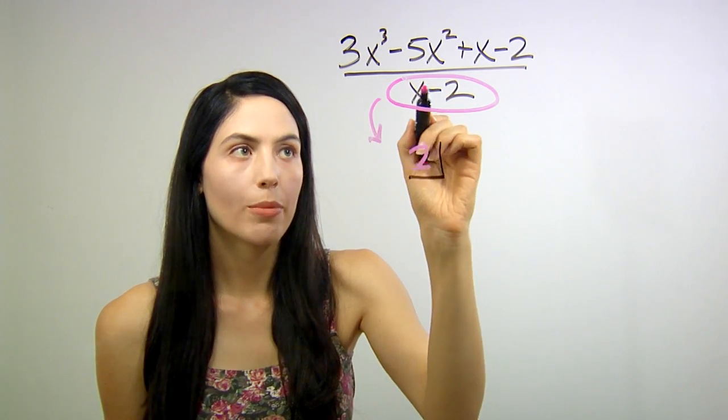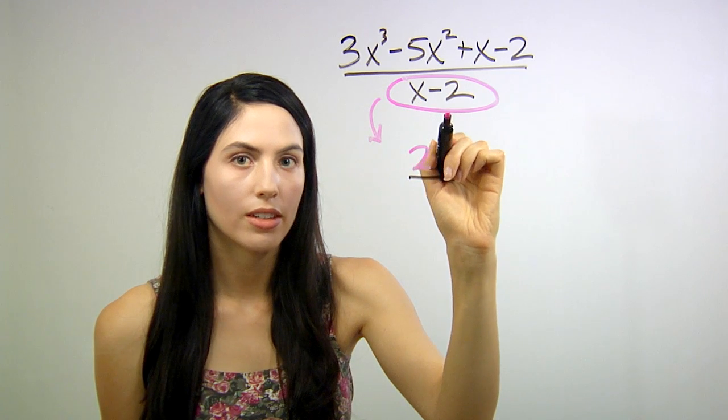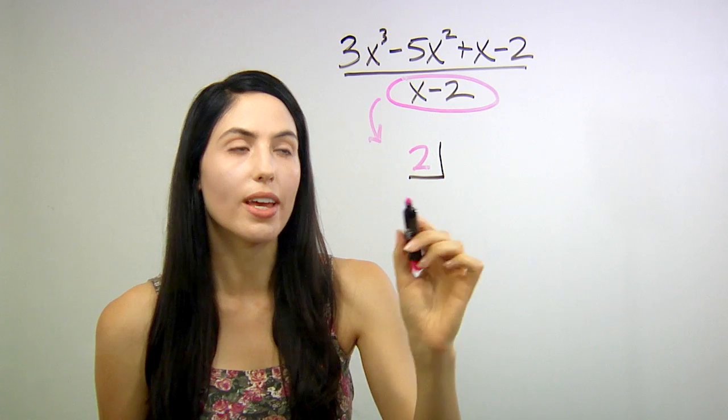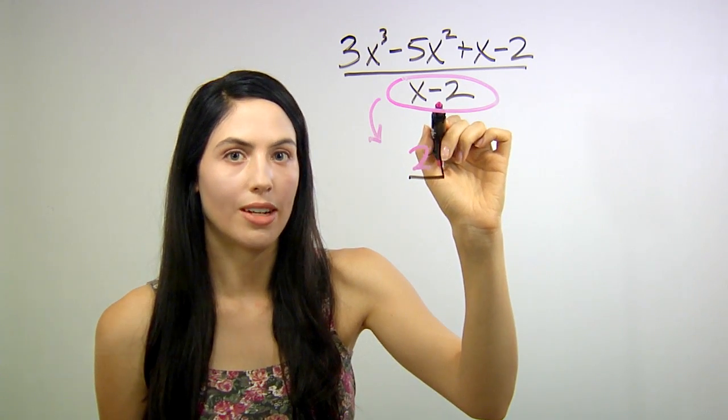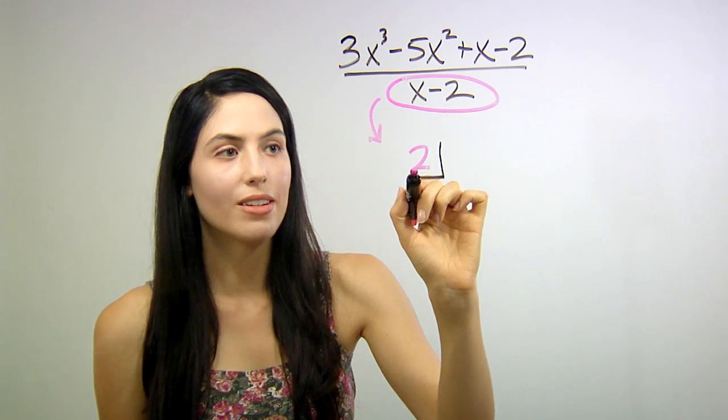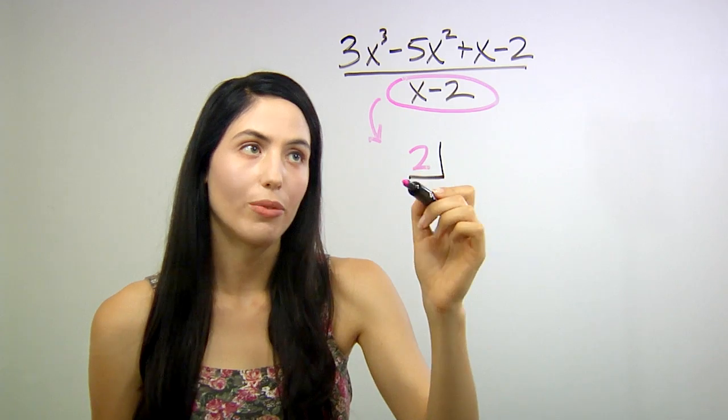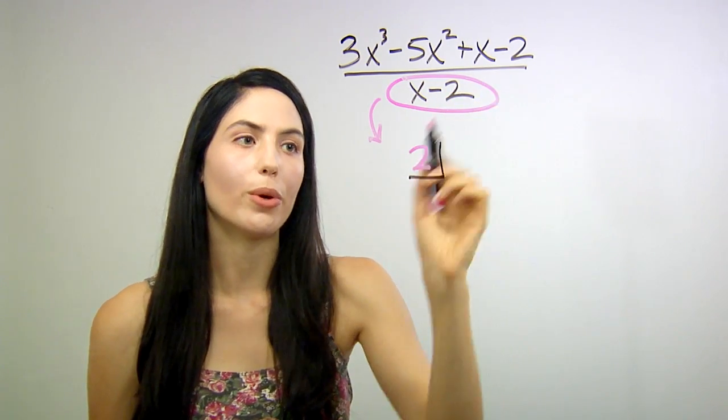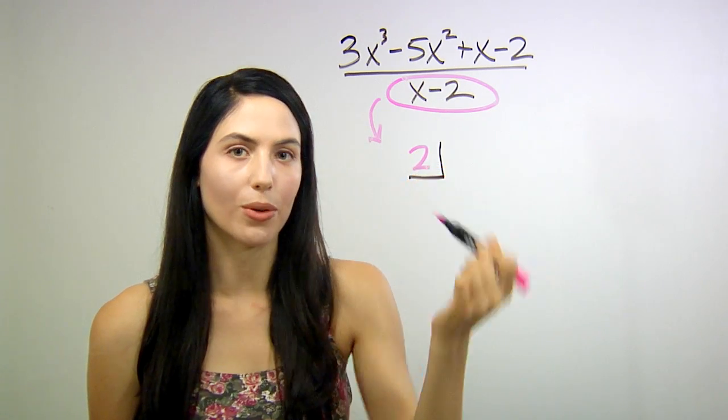Basically, whatever the number was in your bottom of your fraction, your denominator, you want to use the opposite sign version of that number. So since we had negative 2 in the denominator, we're going to put positive 2 here in the corner. If we instead had positive 2, x plus 2 in the bottom, we would have put negative 2 here in the corner.